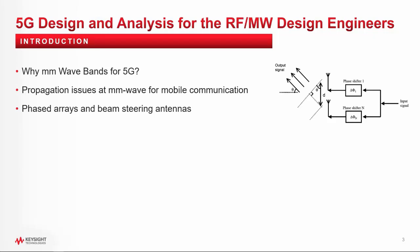Why millimeter wave bands for 5G? 5G is expected to offer extremely fast rates with extremely low latency. To achieve these tough specifications, the operating frequency must be in a region where high bandwidth and high speed is available. This means we must move toward the millimeter wave band. But the millimeter wave band had always been viewed as unsuitable for mobile communications, mainly because of high loss and propagation issues.